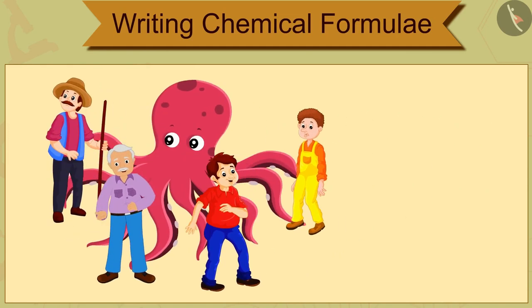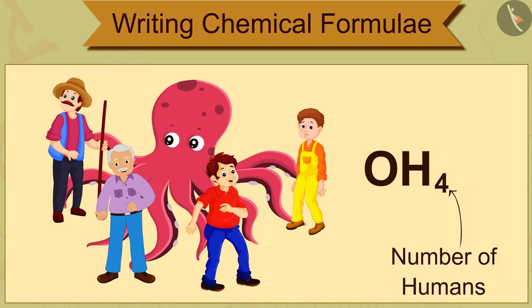The octopus can hold up to 4 humans. Therefore, we can write its formula as OH4, where 4 represents the number of humans captured by the octopus.